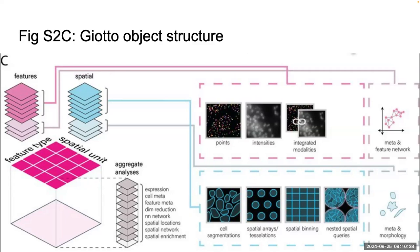The spatial units can be segmentations — they have a polygon class to represent segmentation information — but also spatial arrays, like ordinary Visium, which would be a type of spatial pattern. Or it could be represented in terms of bins, more like Visium HD. You can have more complex arrangements of any of these types of spatial patterns, and they say you could even nest them — so you could have points inside cells, intensities inside cells. It's very open-ended what you can do with the object structure.